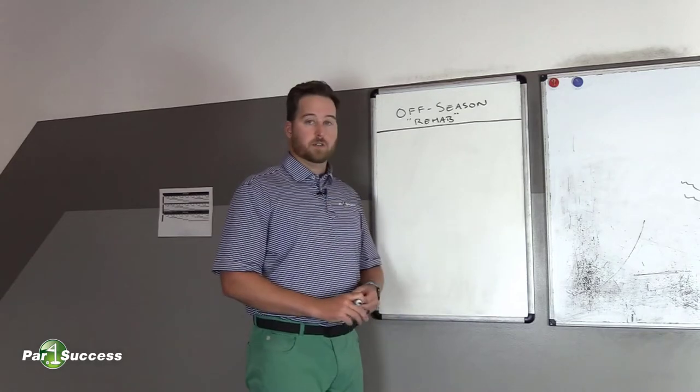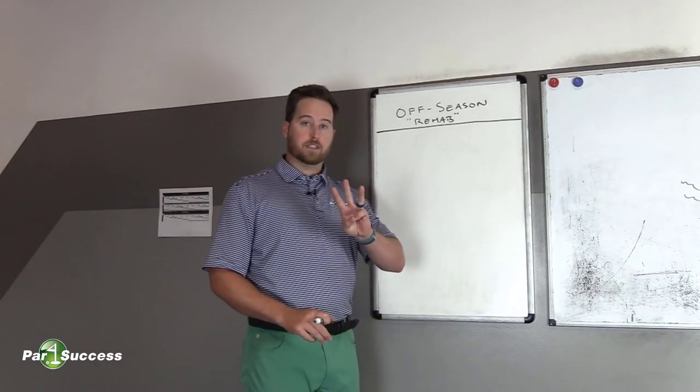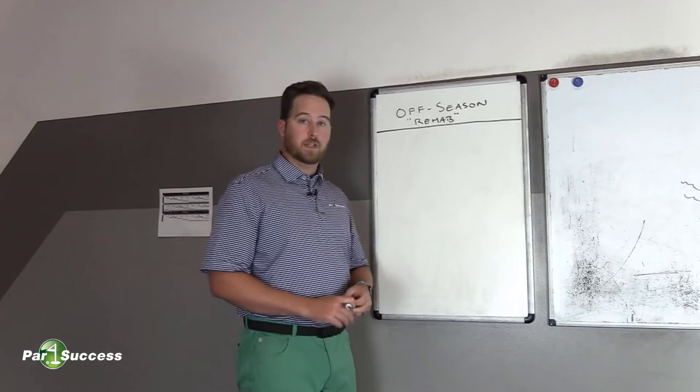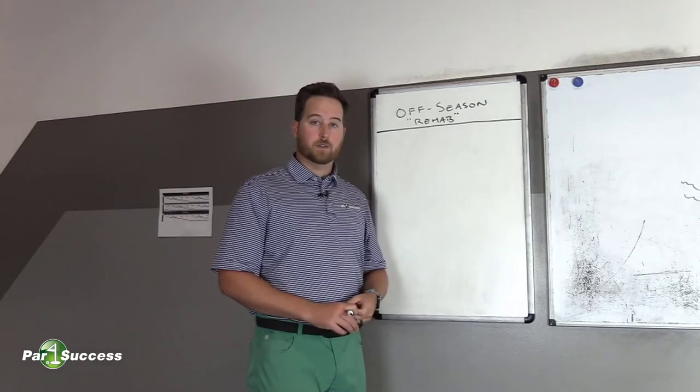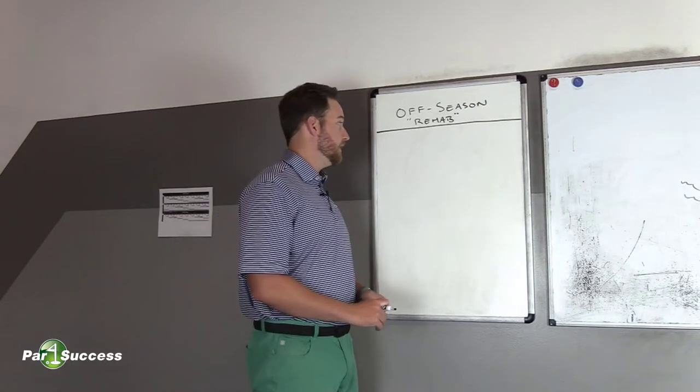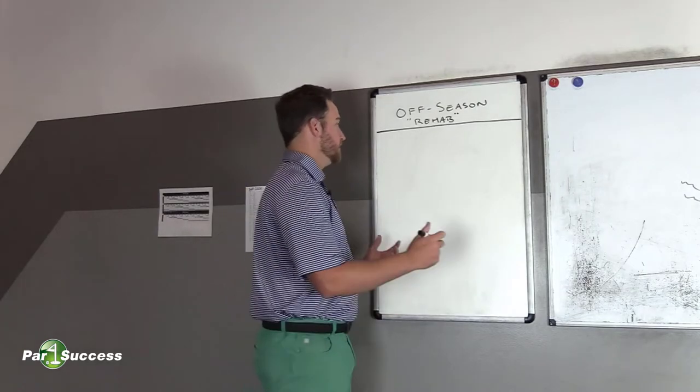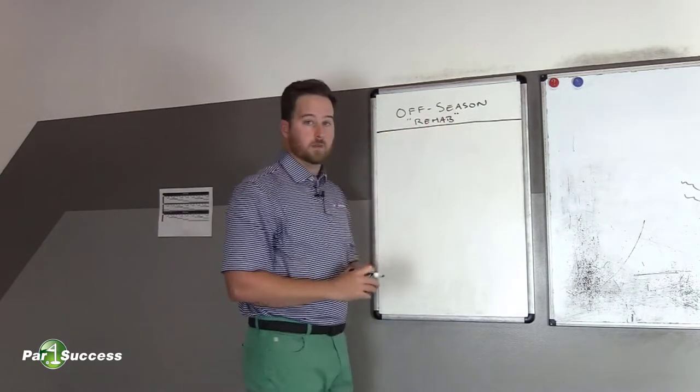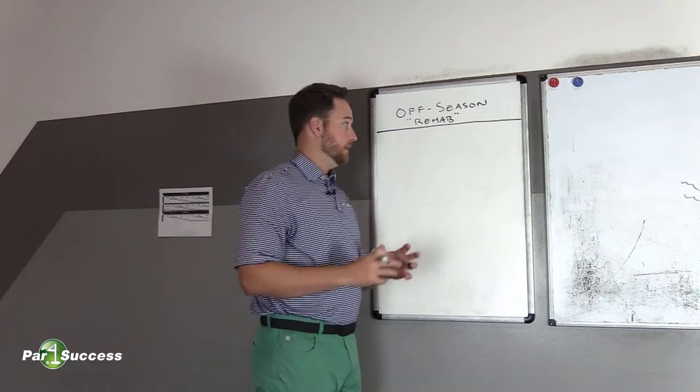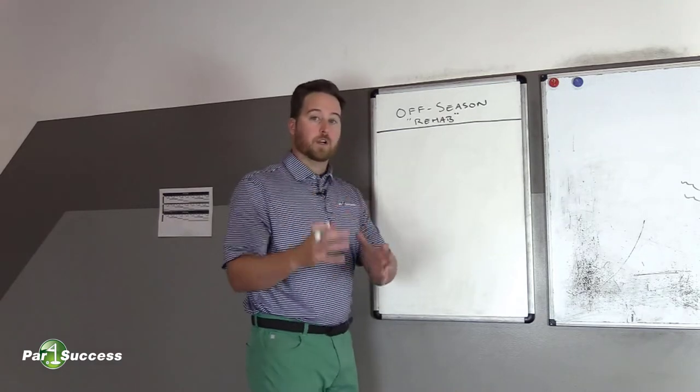What we're going to do is create three different sections and we're going to have three variables that we care about for each of those sections. A three by three matrix, if you will. So at the top is going to be the three different ways that we can do workouts.